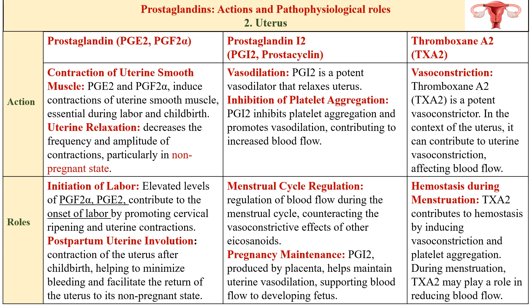Now the effect of prostaglandins on the uterus: PGE2 and PGF2α contract the uterus. These are essential during labor and childbirth — they induce contractions of the uterine smooth muscles. In the non-pregnant uterus, they decrease the frequency and amplitude of contractions. Their main role is in initiation of labor and postpartum uterine involution.